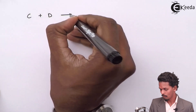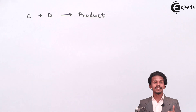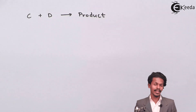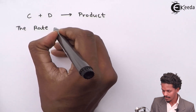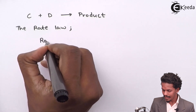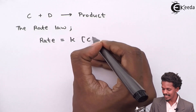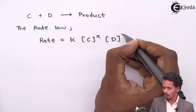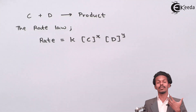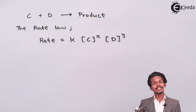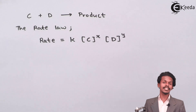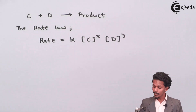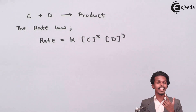The reaction provided to us is C plus D giving a product. Based on this equation, we can write the rate law. The rate law is written as: rate equals K times concentration of C raised to X, multiplied by concentration of D raised to Y. We don't yet know the values of X and Y. I will mark this as equation number 1.